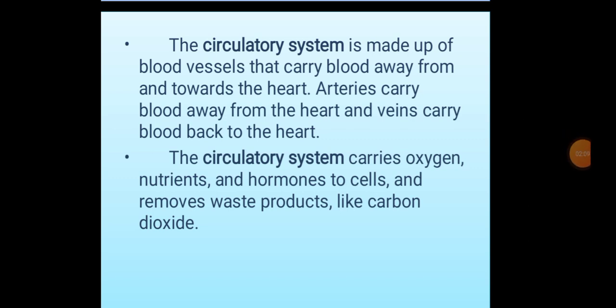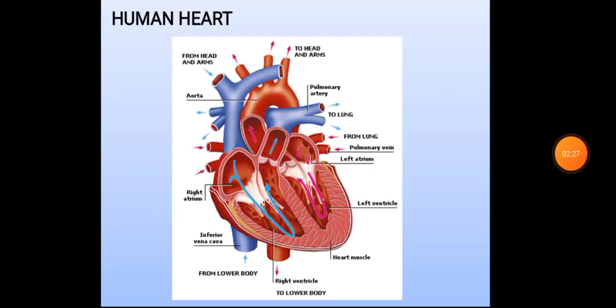Arteries carry blood away from the heart and veins carry blood back to the heart. The circulatory system carries oxygen, nutrients, and hormones to cells and removes waste products like carbon dioxide. The circulatory system is also known as the cardiovascular system. It comprises blood, blood vessels, and the heart.